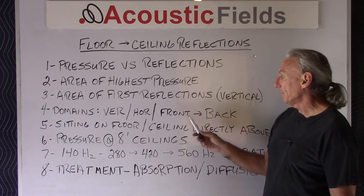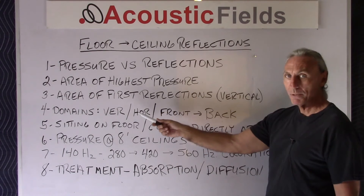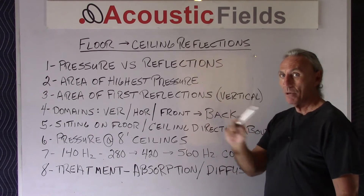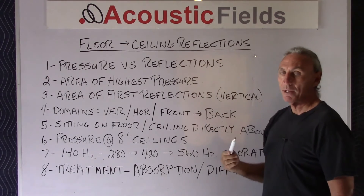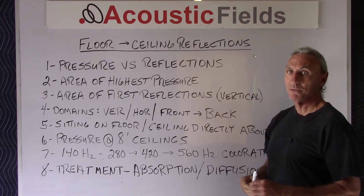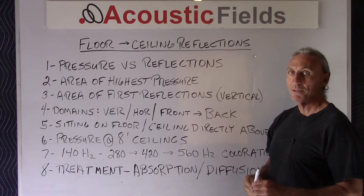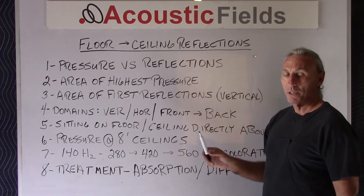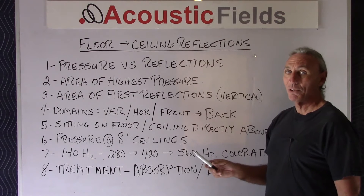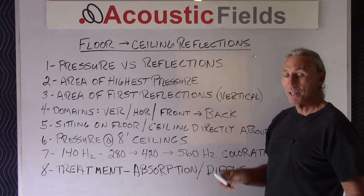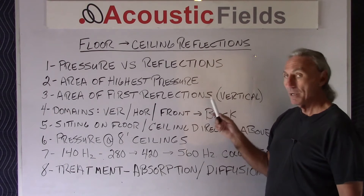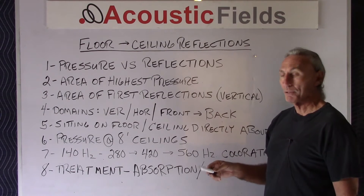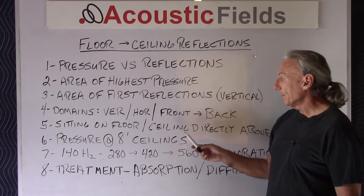So it's an area of first reflections for the vertical domain — why is that the case? Let's go back to our domains: we have vertical, horizontal, and front to back. We have these three dimensions of sound fields that we have to be concerned about. You're sitting on the floor — you can't really get much closer to a surface than the one you're sitting on, so that's a reflection point, a boundary surface with a reflection point, and we have to be very careful with that.